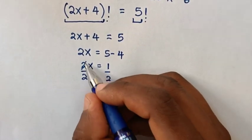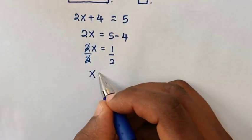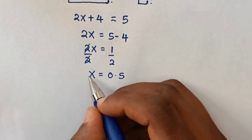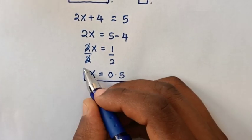So this and this will cancel. Therefore, x is equal to 0.5. So this is the final answer for the value of x.